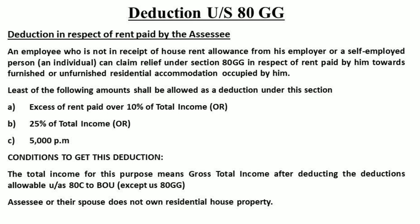The deduction is the least of the following: rent payment minus 10% of total income; 25% of total income; or Rs. 5,000 per month (i.e., Rs. 60,000 per year). The amount least among these three conditions is allowed as deduction under Section 80GG.